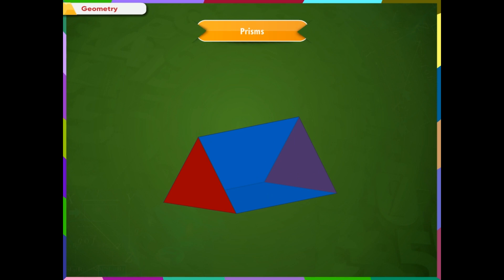Prisms. This is a polyhedron with two parallel faces called the bases. The lateral faces can be a rectangle or a parallelogram.